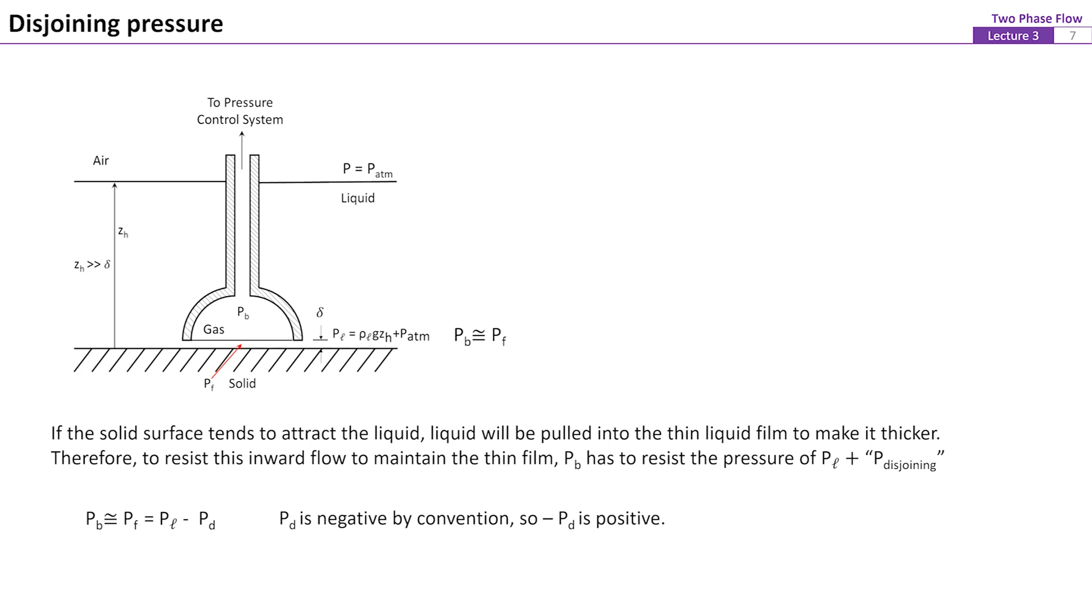Here we introduce another important concept associated with the spread of thin liquid film on a solid surface, the disjoining pressure. Considering the condition shown by this figure, the liquid fully wets the solid surface. A hemispherical container with a vapor bubble trapped inside is brought into close proximity to the solid surface. A thin liquid layer with a thickness of delta is maintained between the vapor and solid surfaces.